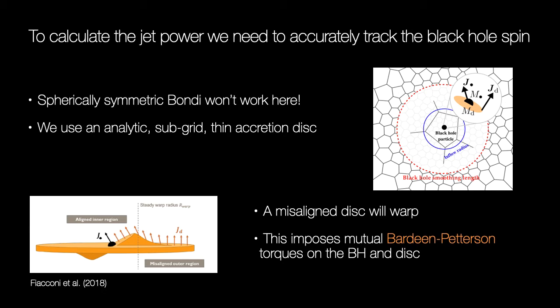This subgrid system is fully embedded in the hydro scheme which we use to calculate inflow rates onto the alpha disk. We also allow for the possibility that the disk is misaligned with respect to the black hole spin direction. In this case the disk is expected to warp and this imposes a Bardeen-Petterson torque on the black hole and on the disk, so we take this into account to more accurately model the angular momentum evolution.